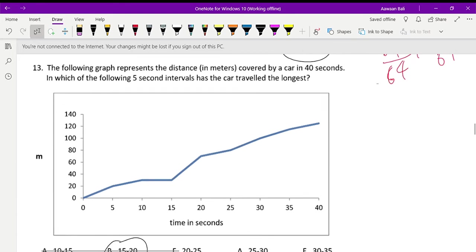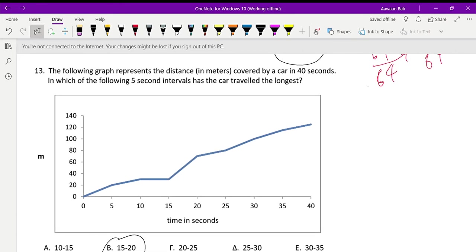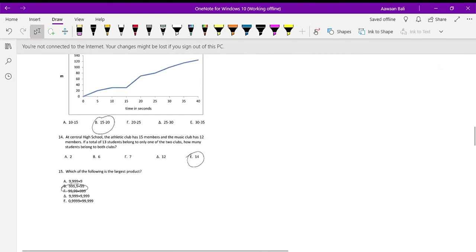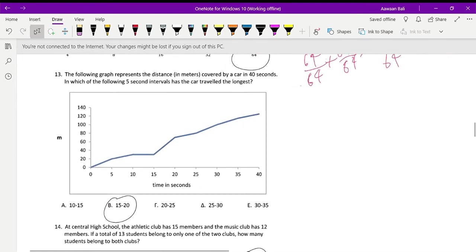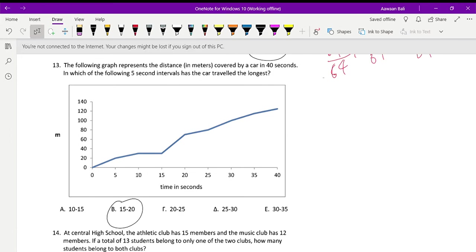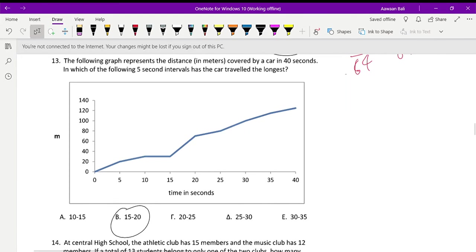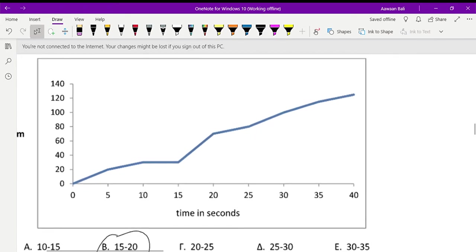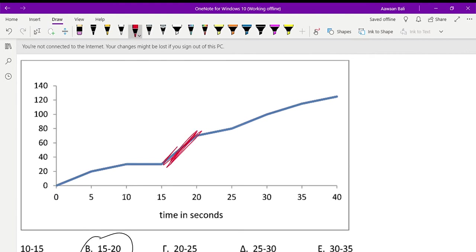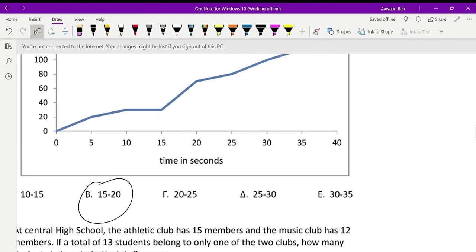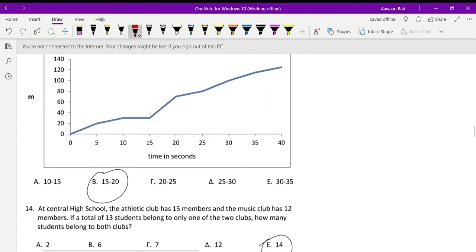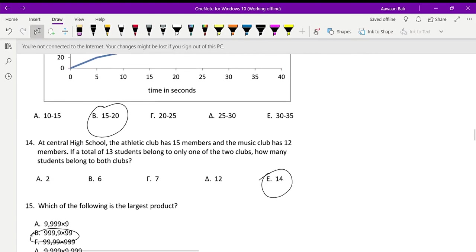Question number 13. The following graph represents the distance in meters covered by a car in 40 seconds. Which of the following 5 second intervals has the car traveled the longest? It's 15 to 20, because if you look at 15 seconds to 20 seconds, if you look here, it's a high jump, and that's compared to all of the others. It's the highest jump definitely, and it's clear to see. So therefore the answer is B, 15 seconds to 20 seconds.